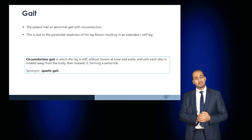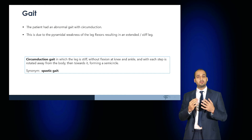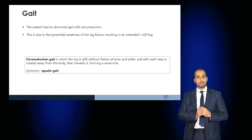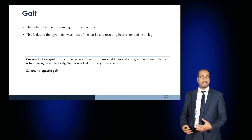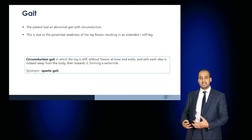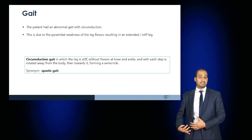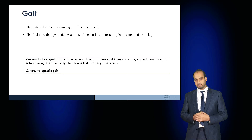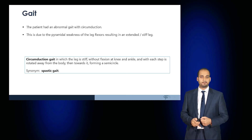When examining a patient's gait following stroke, you would expect an abnormal circumduction gait. This is due to the pyramidal pattern of weakness resulting in leg extension — the affected leg is relatively longer and extended, requiring the patient to form a semicircle with that leg in order to ambulate. This is known as a circumduction gait or spastic gait.